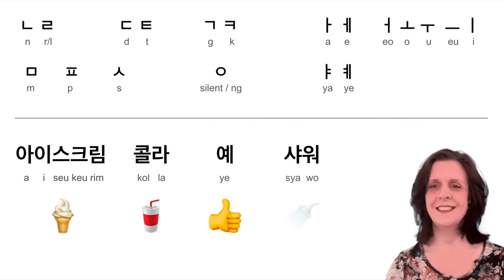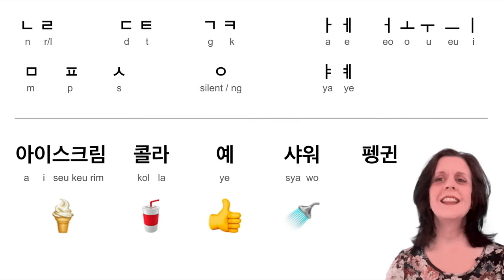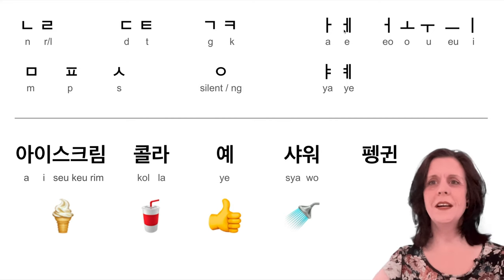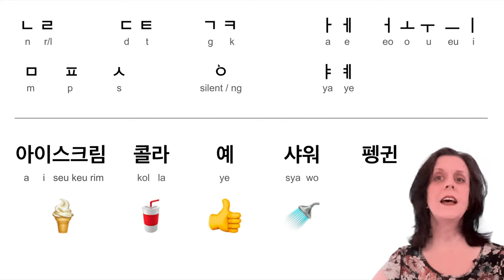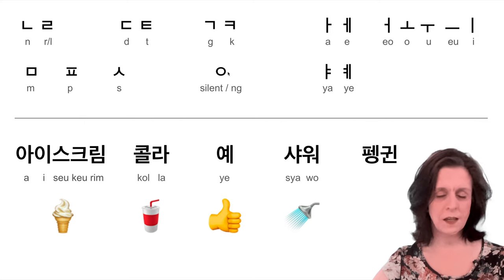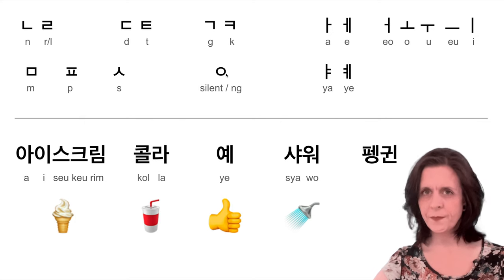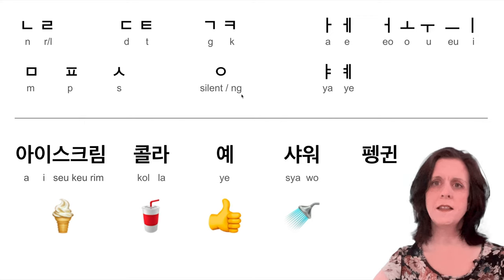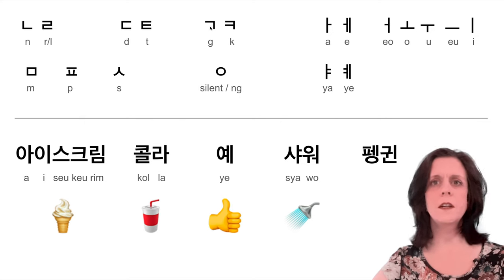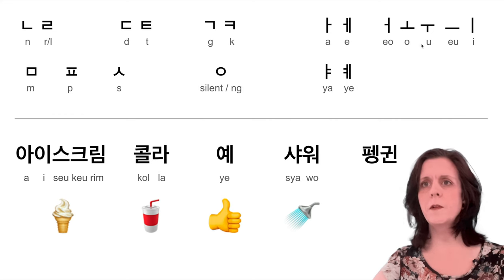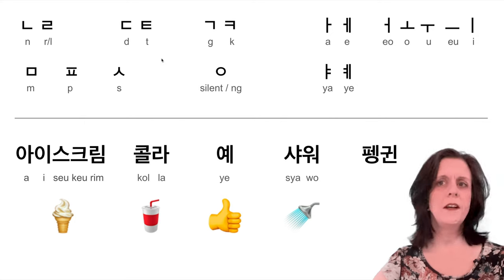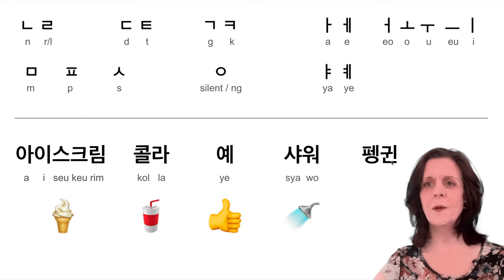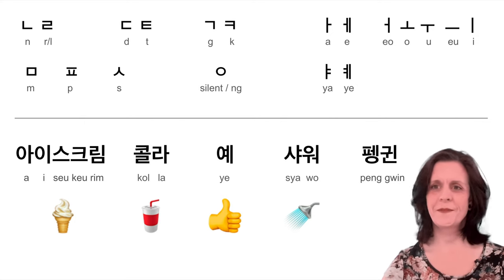P-E-NG — now I need to tell you, if this circle comes at the end of a syllable then it's not silent, it's a NG sound. So that says 'peng'. Here we have a G, another double vowel with U and E that says 'wi', and an N to finish. So this is 'penguin'. Penguin. Yeah, of course it's a penguin.